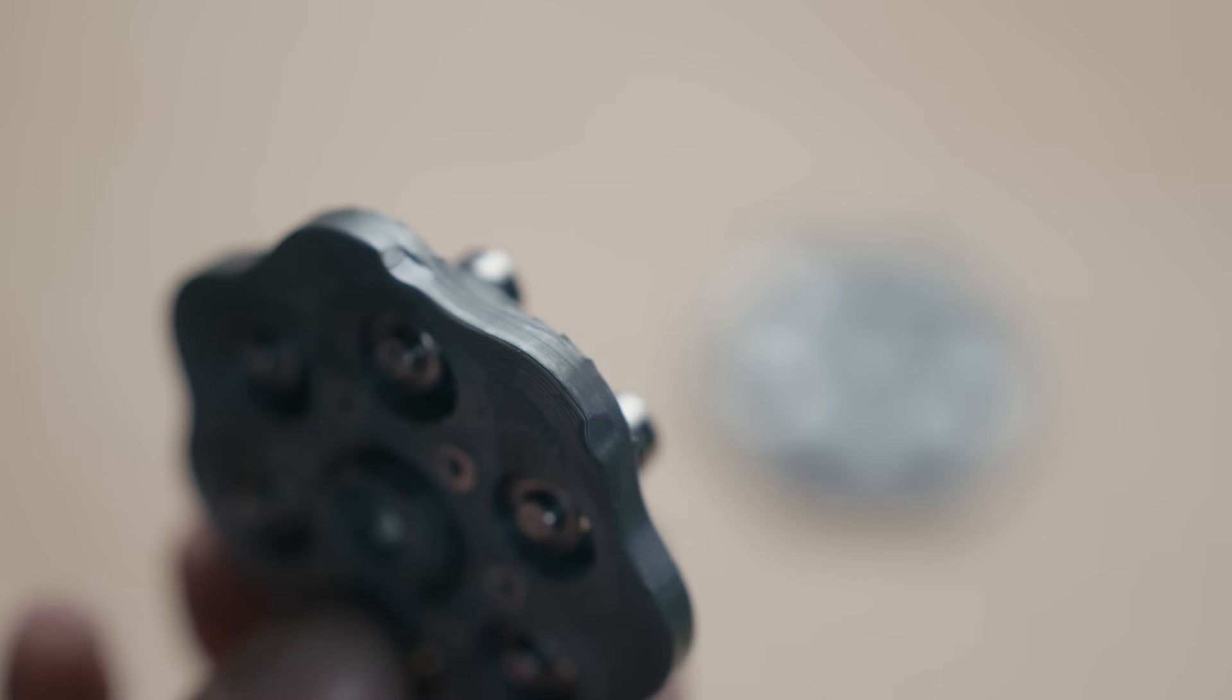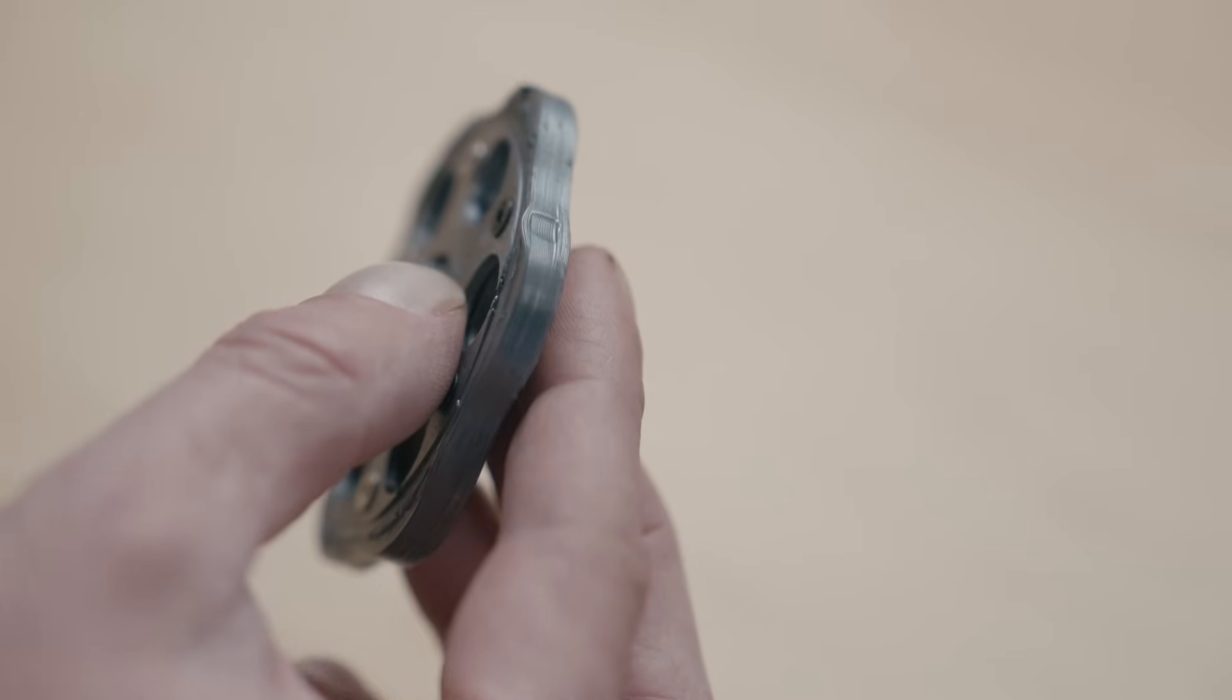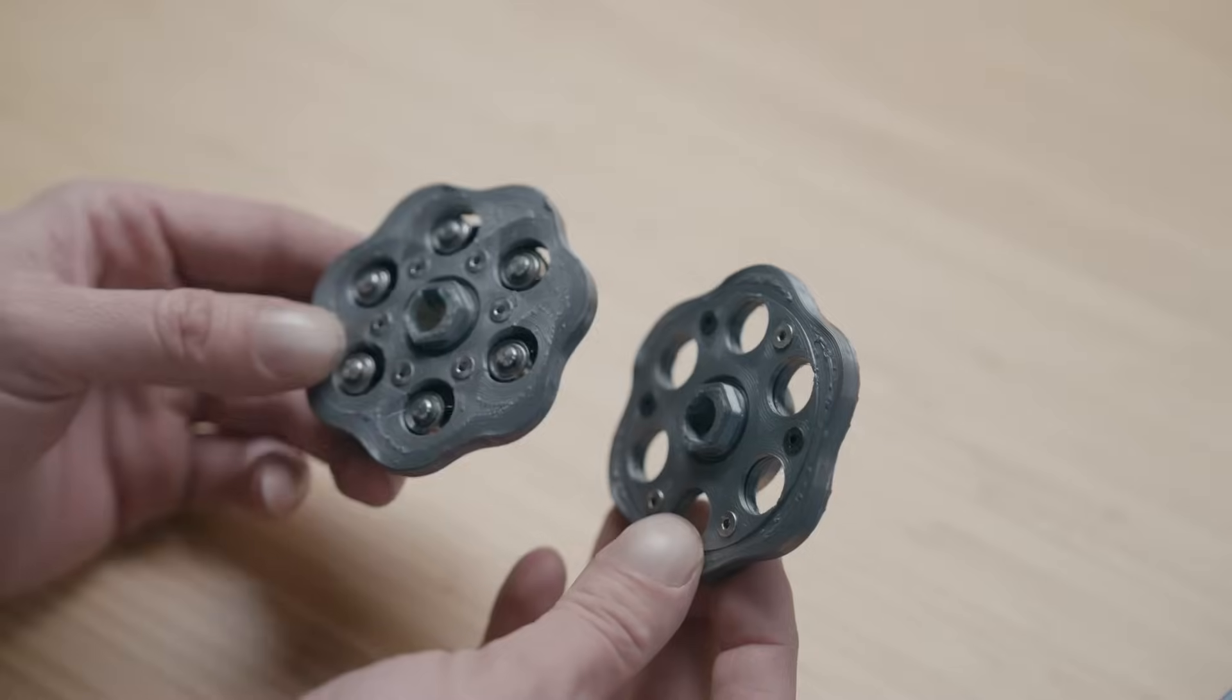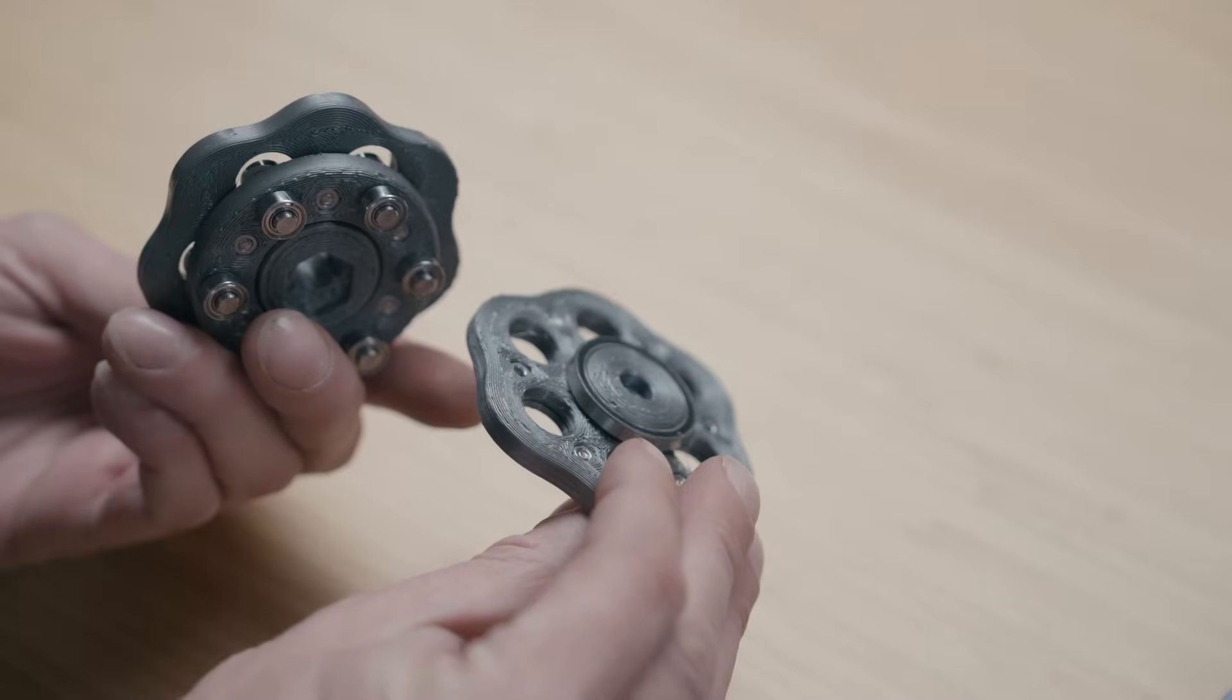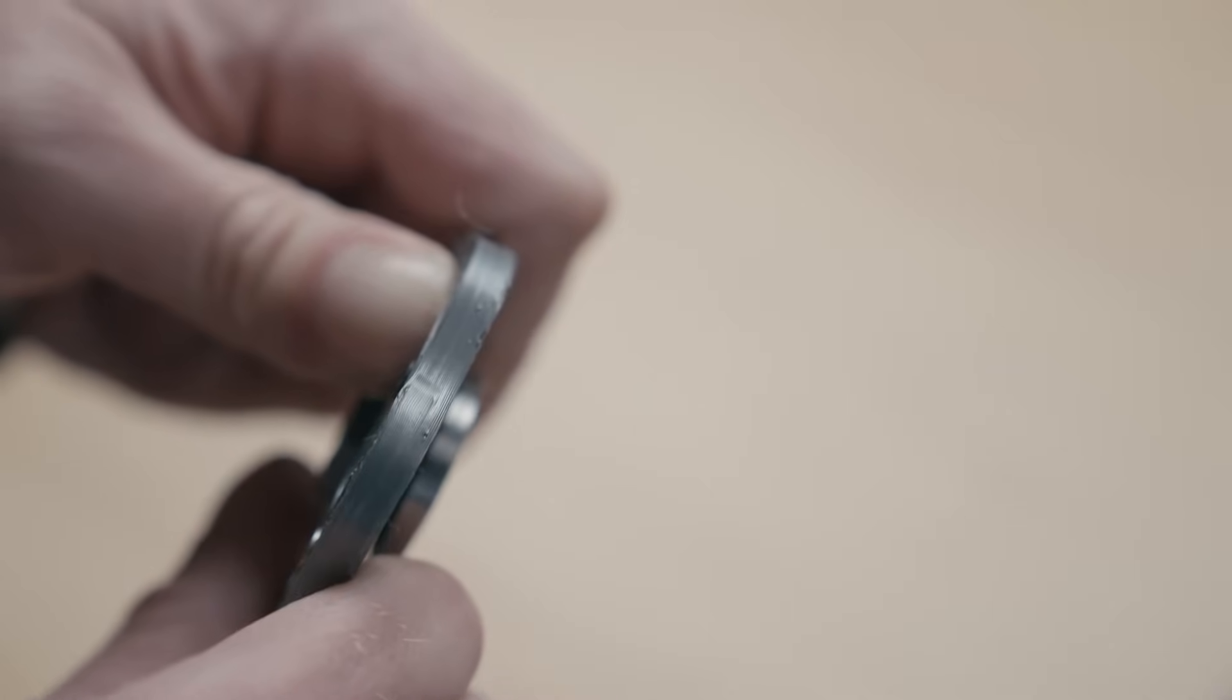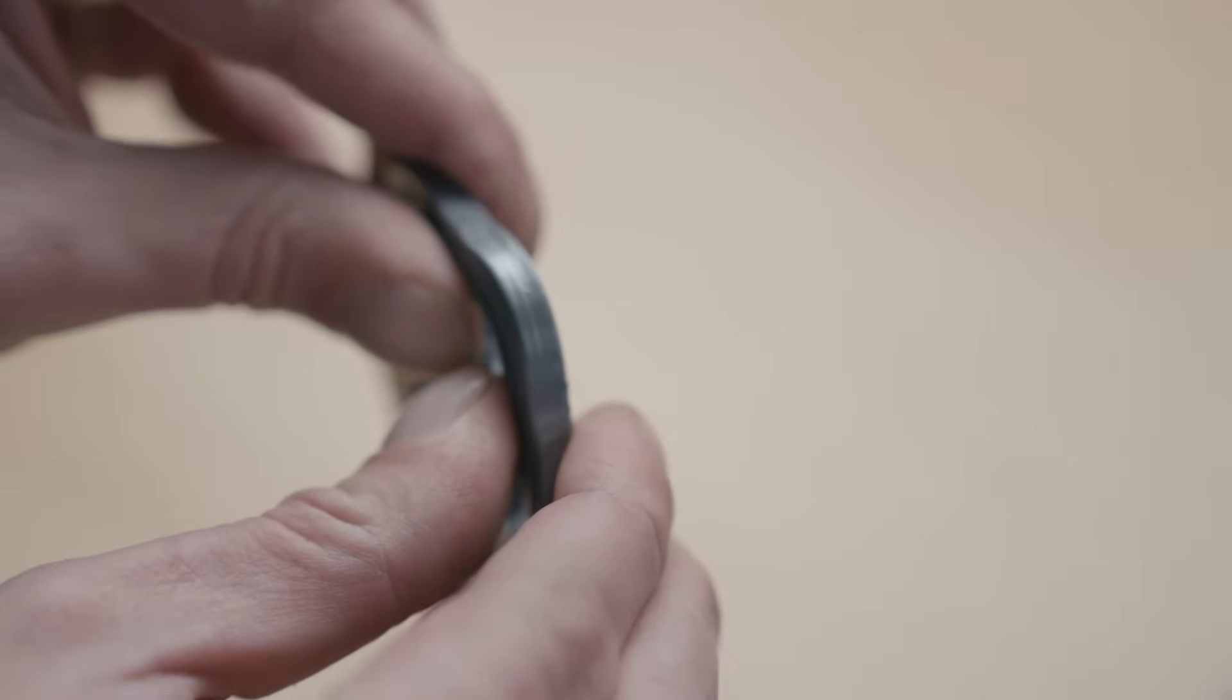Instead, we're seeing indentations all over both discs, where the rollers deform the plastic. And interestingly, we are seeing deformation on both the discs. And this does indicate that the paper was correct, in that the loading of both discs is roughly equal. More than anything, I think this is really just a matter of the materials not being up to the task of withstanding all that torque.